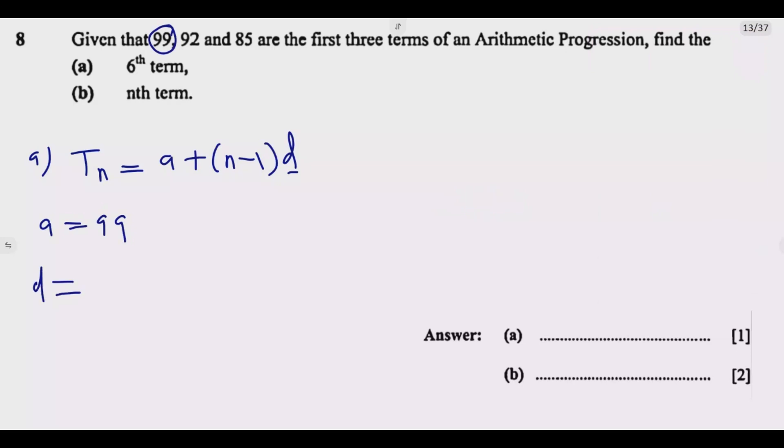What's the difference? The difference is T2 minus T1, so 92 minus 99, which gives me negative 7. Let me confirm: T3 minus T2 equals 85 minus 92, again I'm getting negative 7. So negative 7 is the common difference.